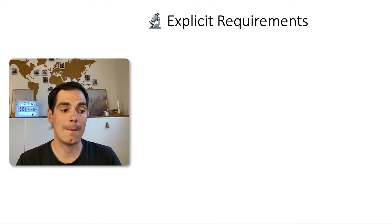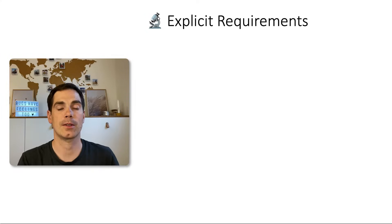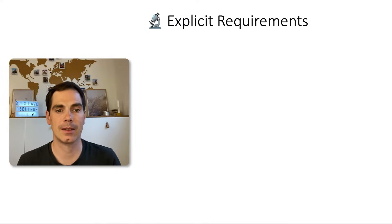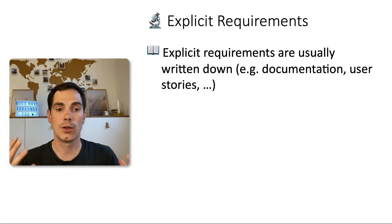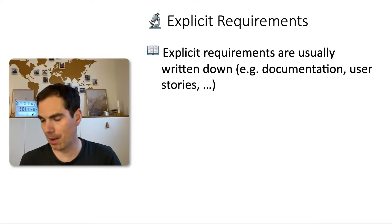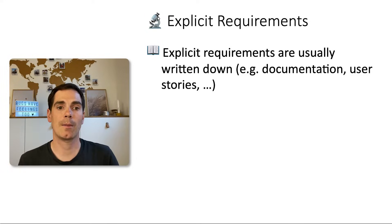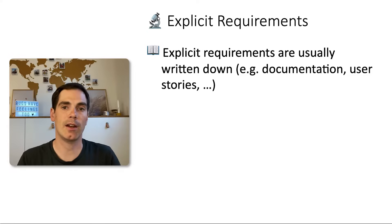The next big topic you've likely heard about, especially as a software tester, is explicit and implicit requirements. Explicit requirements are usually written down — in documentation, a user story, acceptance criteria, a piece of paper, a flip chart, or a mind map. Everything you can write down as a requirement is an explicit one, because it's stated somewhere that everybody can read and follow up on.